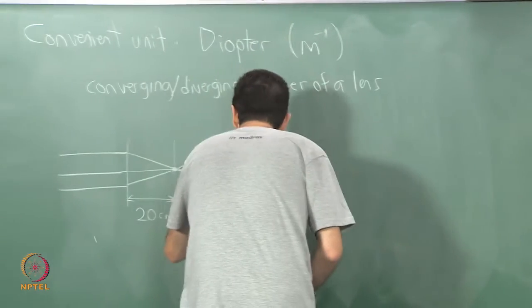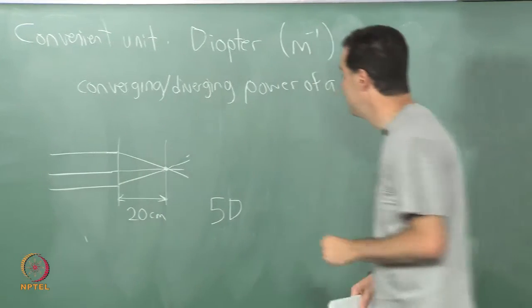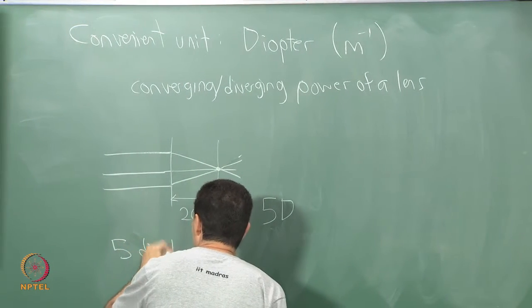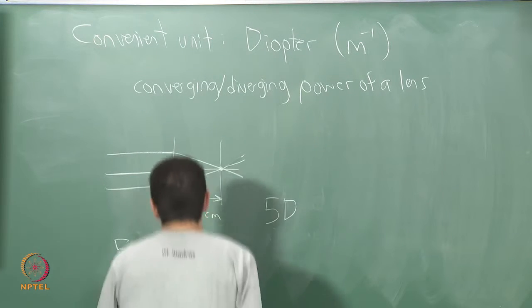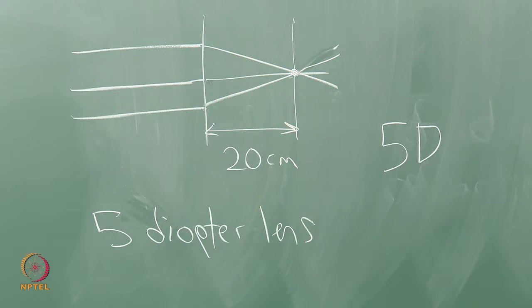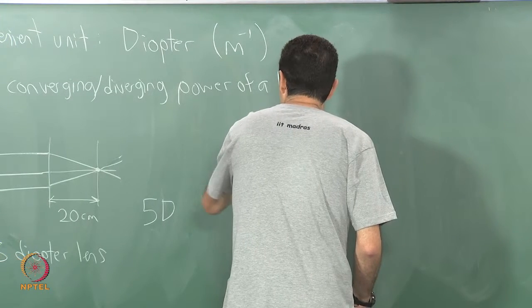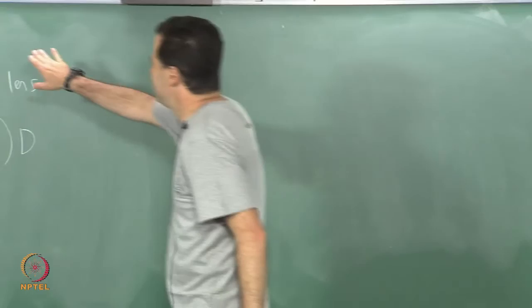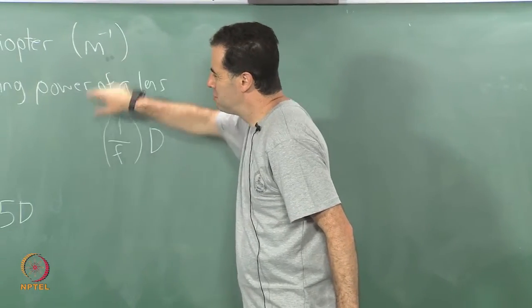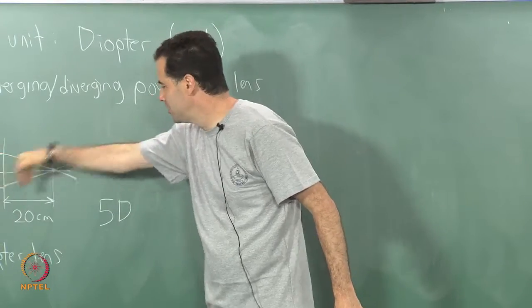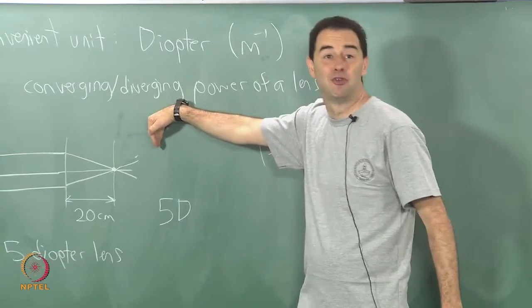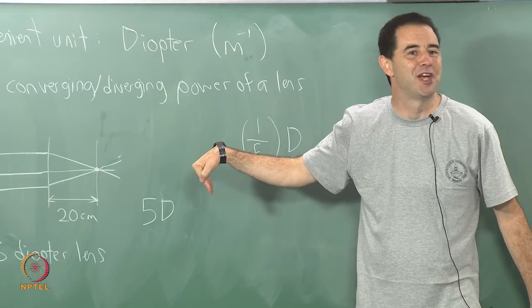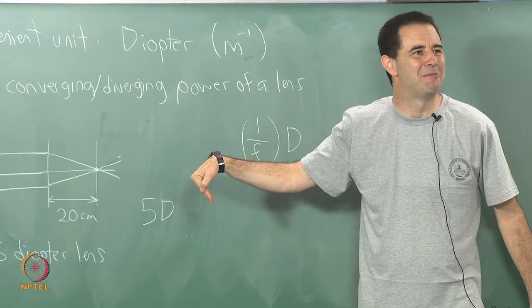In this simple example we would have a 5 diopter lens which we write as 5 capital D. So, this is general we write 1 over focal length, D diopter. So, you can think of it as if I were to perform this operation over and over again I took parallel rays converging to a point, this tells me how many times in a row I could keep converging parallel rays inside of a meter.